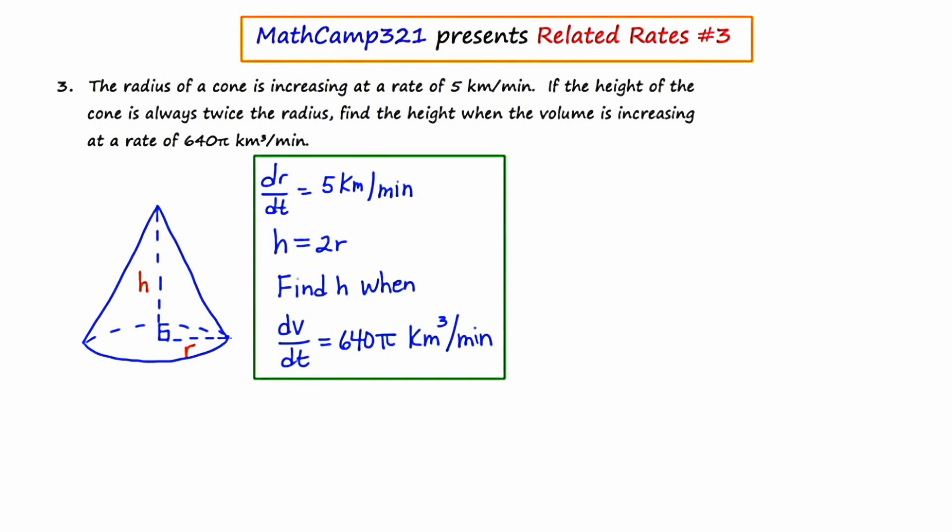Now I'm going to think about the formula or equation which is going to relate all of these things together. And that's going to be the volume formula for a cone. Volume equals one-third π R squared H.